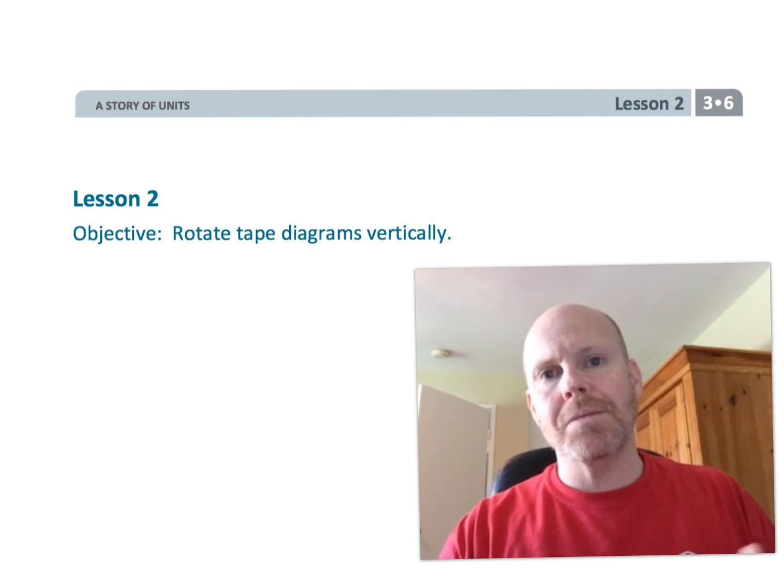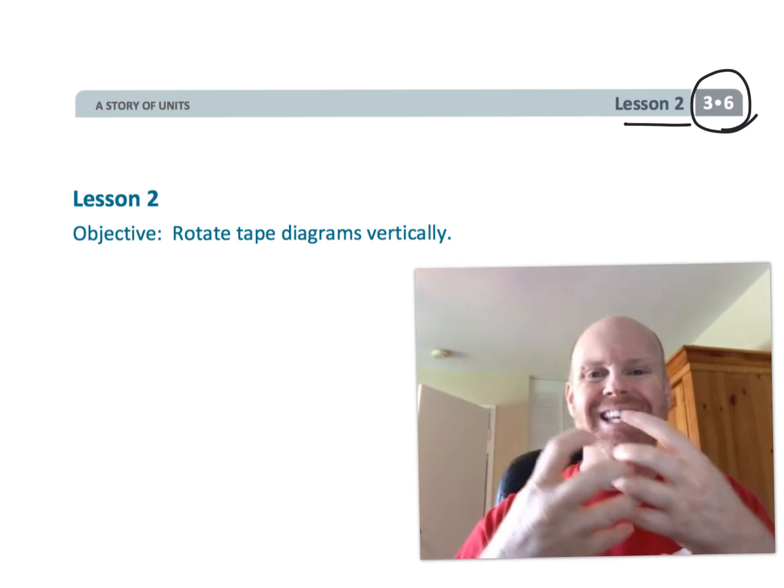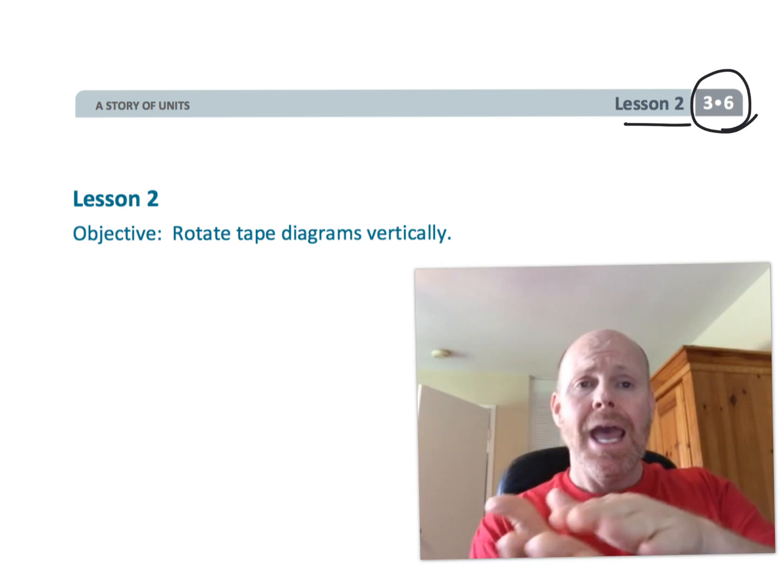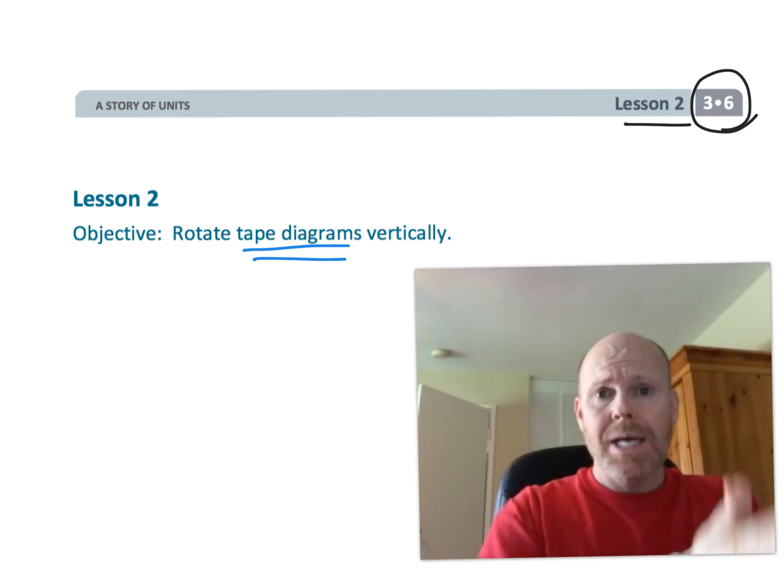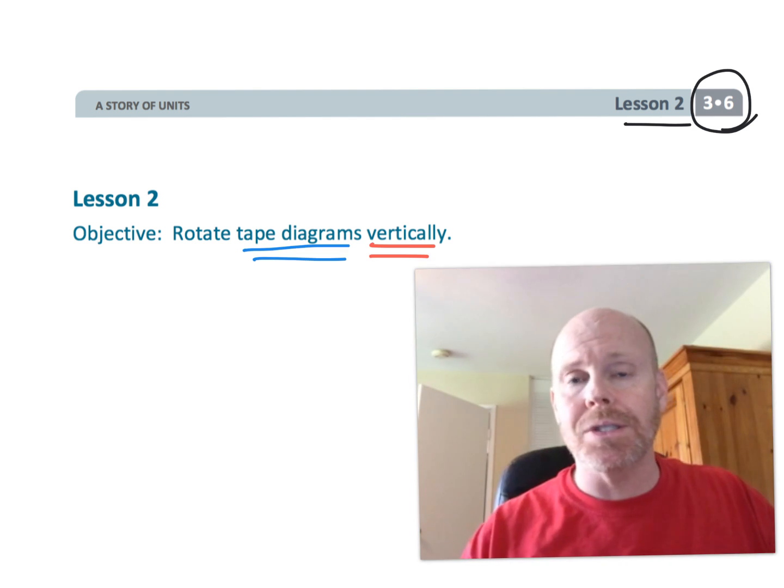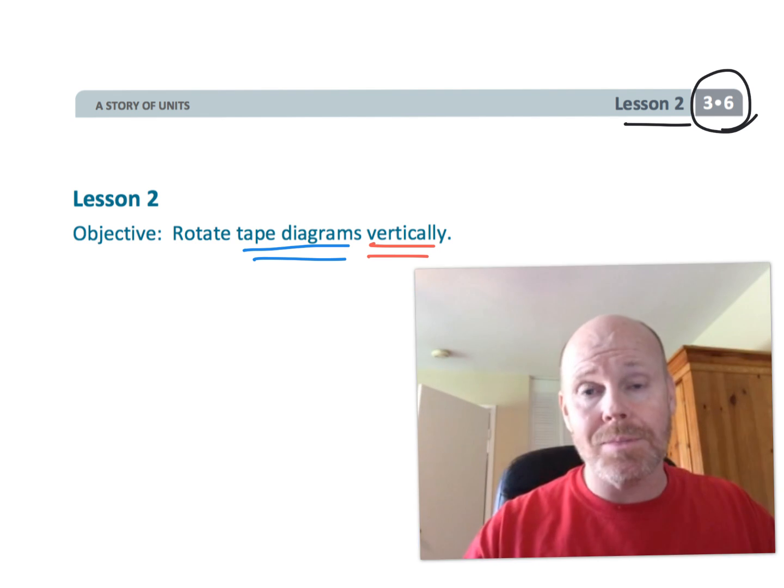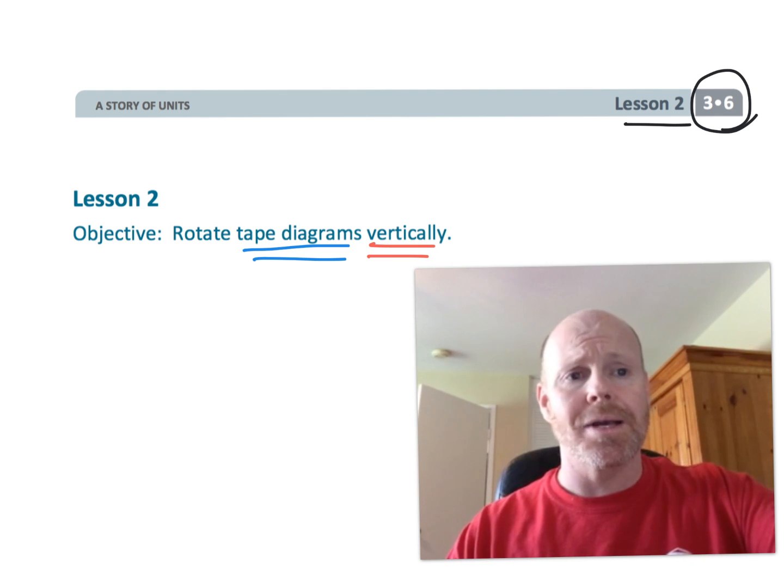Alright, this is third grade module six lesson two. In this lesson, students are going to be taking the horizontal tape diagrams that they're already familiar with and relating those tape diagrams with vertical tape diagrams. Essentially, down the road, instead of calling them vertical tape diagrams, we're simply going to be calling them bar graphs. So let's get started on this.